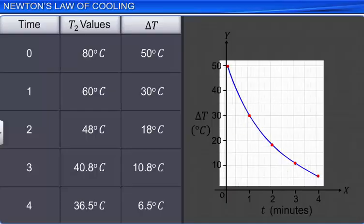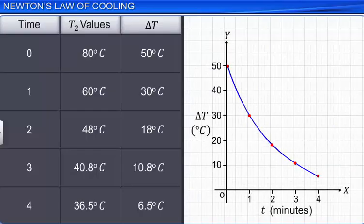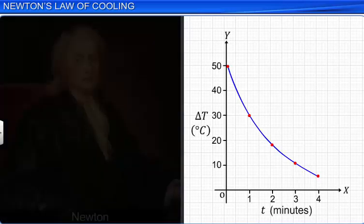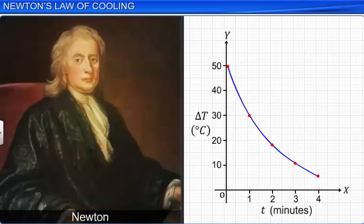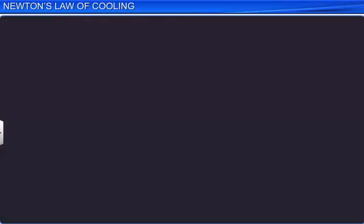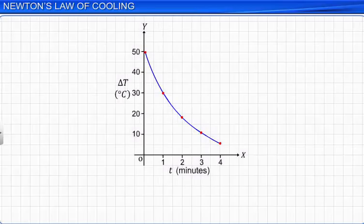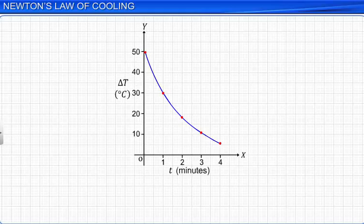Newton made a systematic study of the cooling of different bodies and proposed a law known as Newton's law of cooling, which holds good for small differences in temperature between a hot body and its surroundings. Newton's law of cooling states that the rate of heat lost by a body is directly proportional to the difference in temperature between the body and its surroundings.